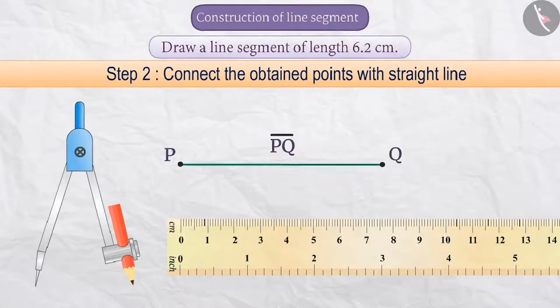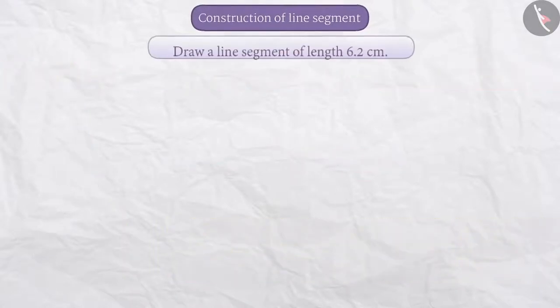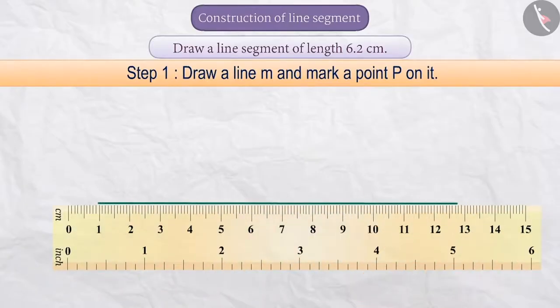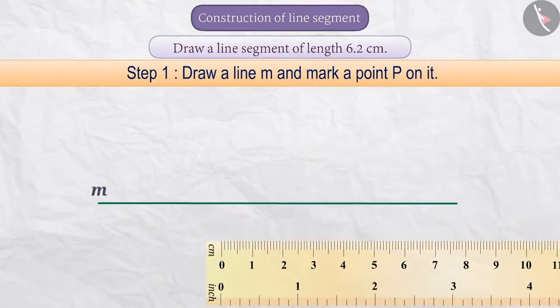Suppose we have to draw a line segment of length 6.2 cm. Step 1: First of all, we will draw a line. We will name it line M. Then we will mark a point on the line and name it P.